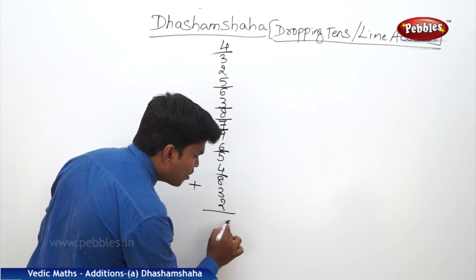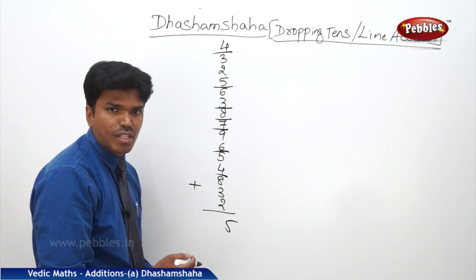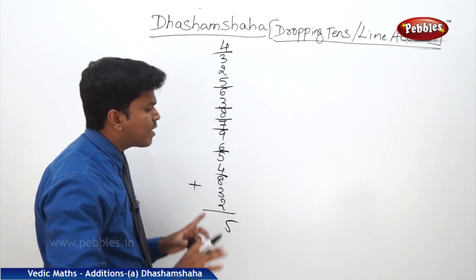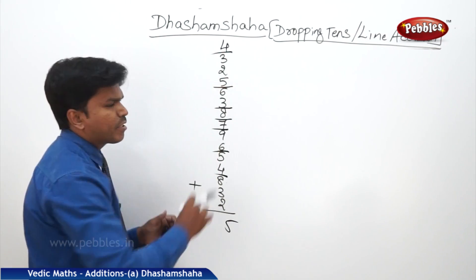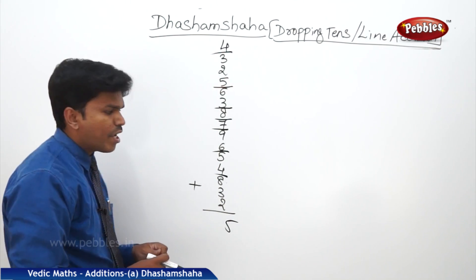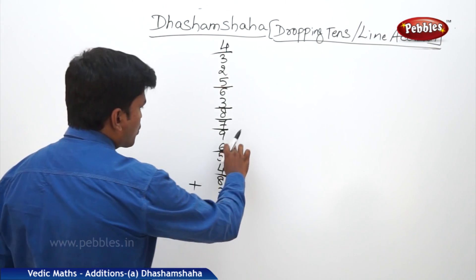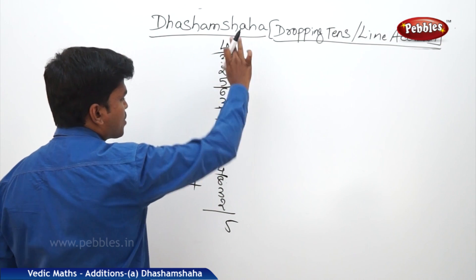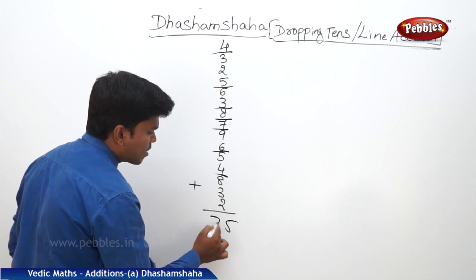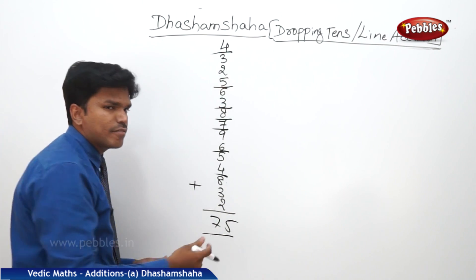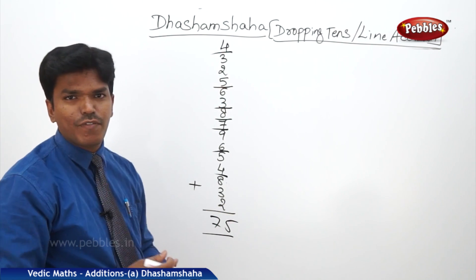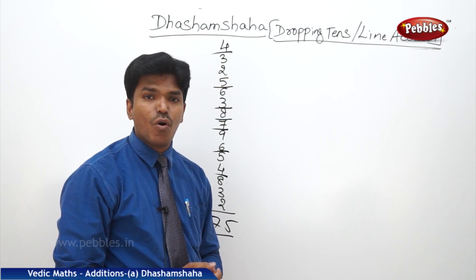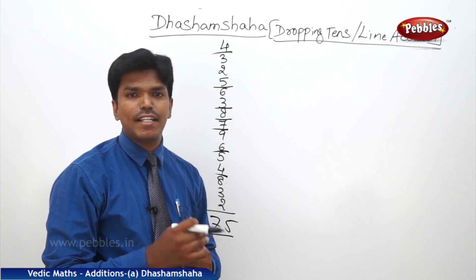Write that 5 immediately down. Now count how many tens you have dropped. 2 plus 3 is 5. 5 plus 2 is 7. So what is your answer? 75. That's how easy it is.